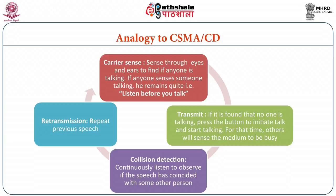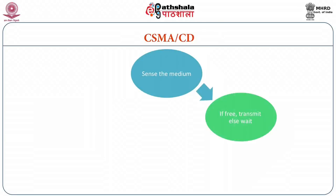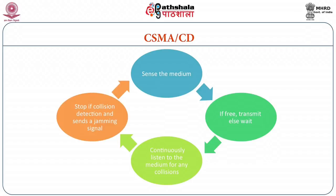In this analogy, the medium is sensed to be free or busy — through ears, eyes, or the round table button light. If free, transmit; else wait, and continuously listen to the medium for any collisions. If collisions are observed, stop and then repeat the previous speech. This is how CSMA/CD works: it senses the medium; if free, it transmits; continues to listen; and if any collision is observed, it stops transmission, sends a jamming signal, and retransmits the packet.